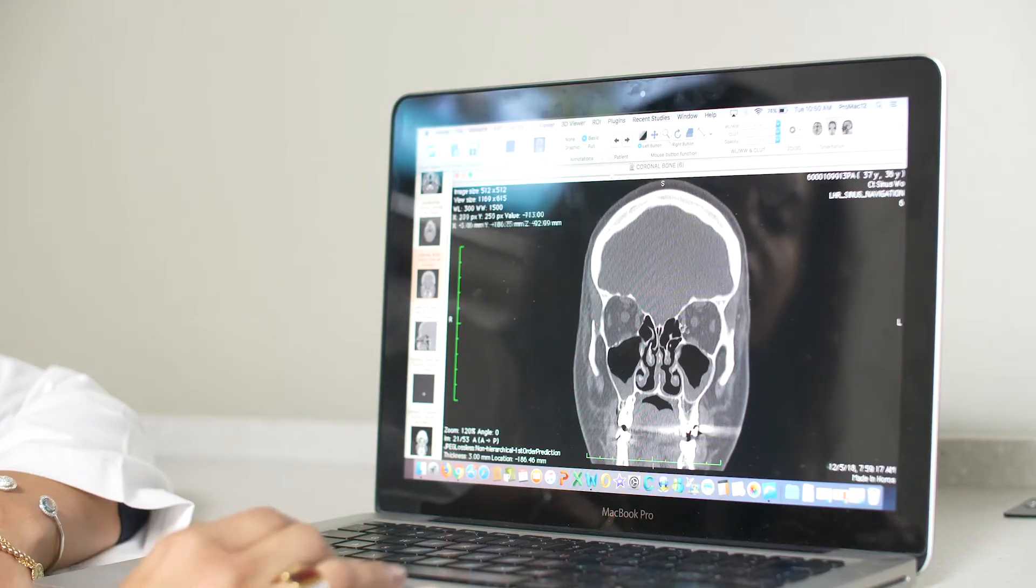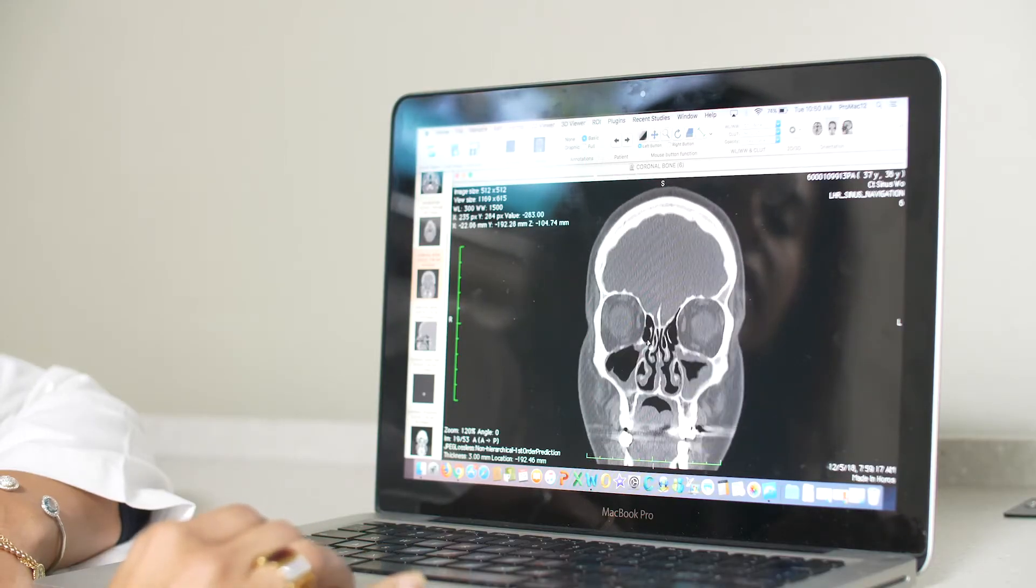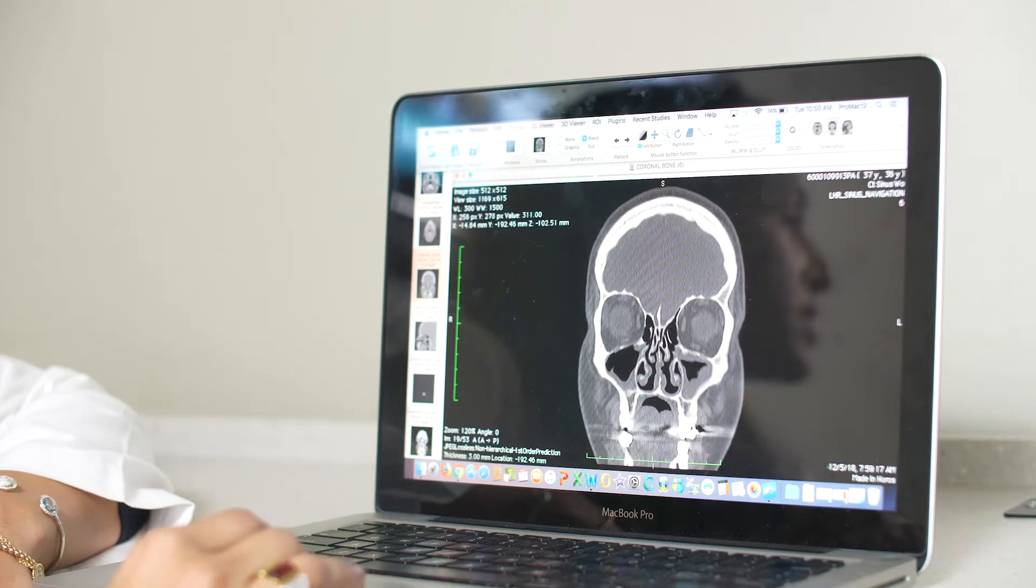Your brain is over here, your eyes are over here. This is the inside of your nose and your septum divides the right and left side of the nasal cavity.